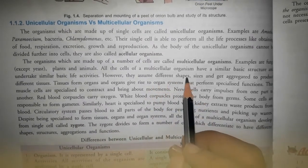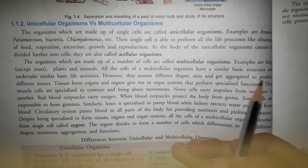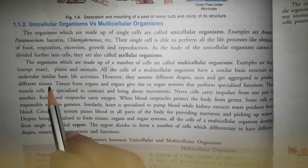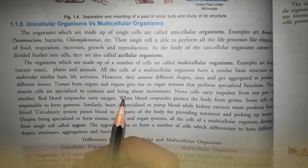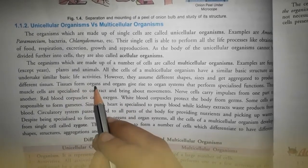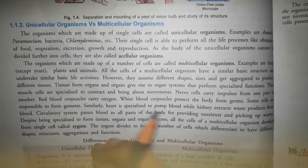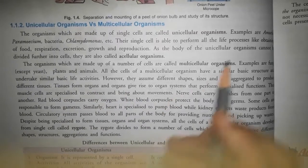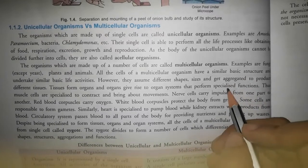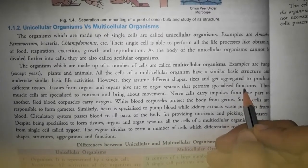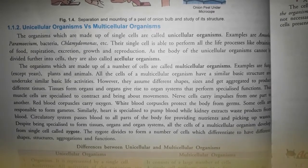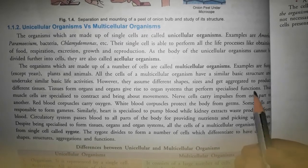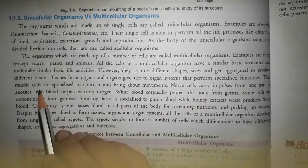इन cells की shape और size थोड़ी different हो सकती है. ये आपस में aggregate होकर tissues बनाते हैं. Tissues combine होकर organs बनाते हैं, और organs combine होकर organ system बन जाता है. पूरा organ system बनने के बाद वो specialized function perform करता है, जैसे muscle cells जो body movement को control करते हैं.